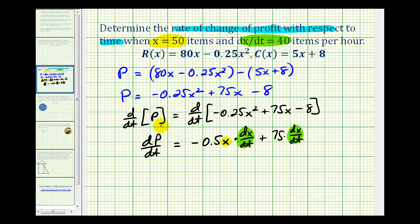And this will tell us the rate of change of the profit. So we have negative 0.5 times 50 times 40 plus 75 times 40. This is going to be negative 1,000 plus this product is 3,000.